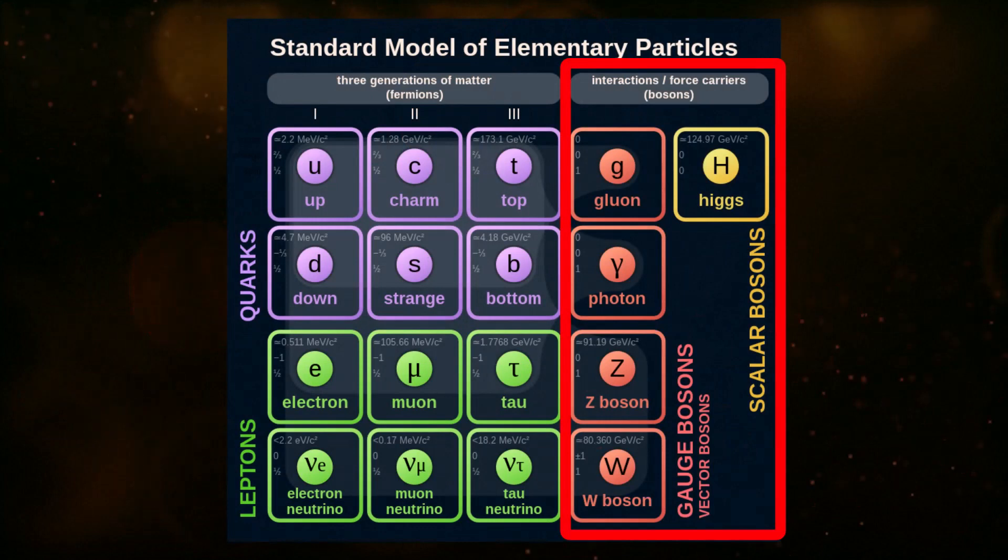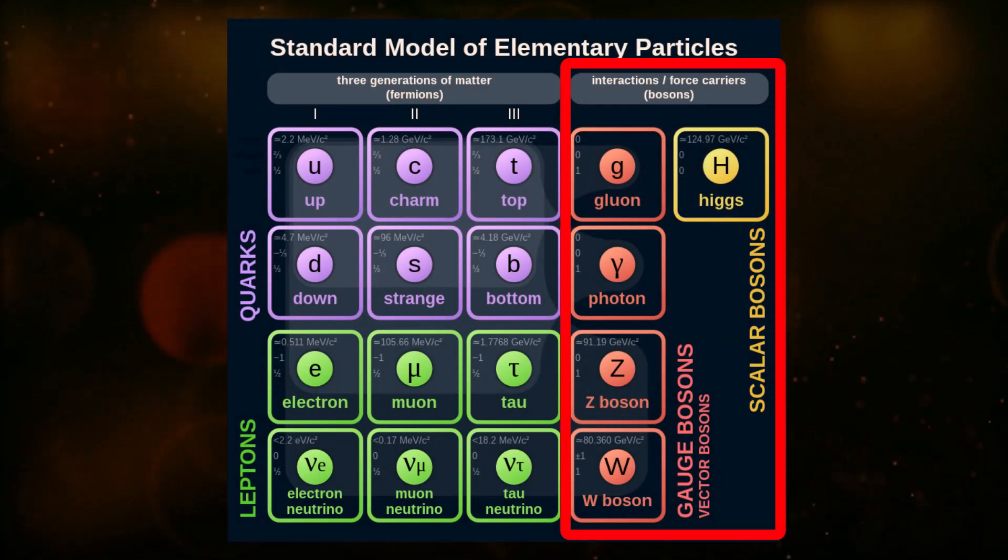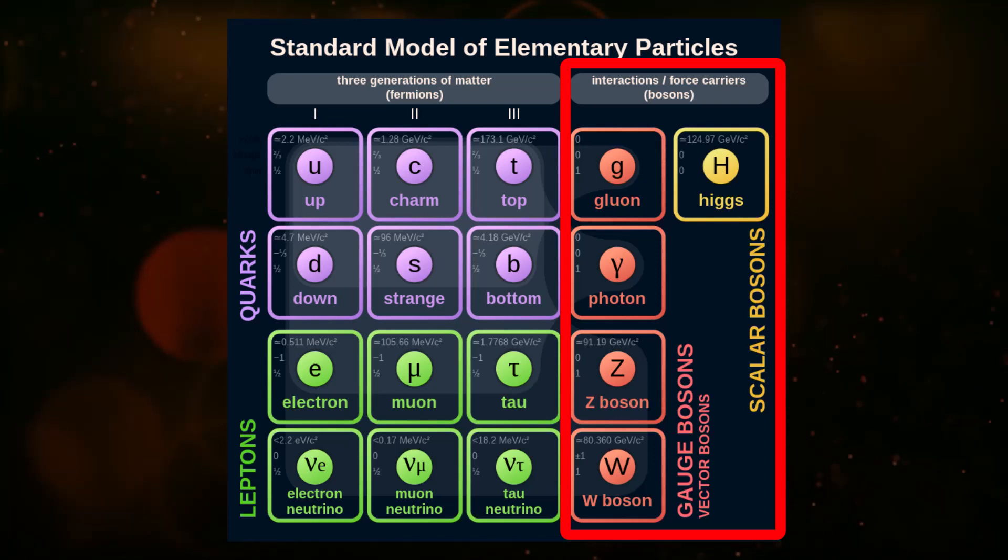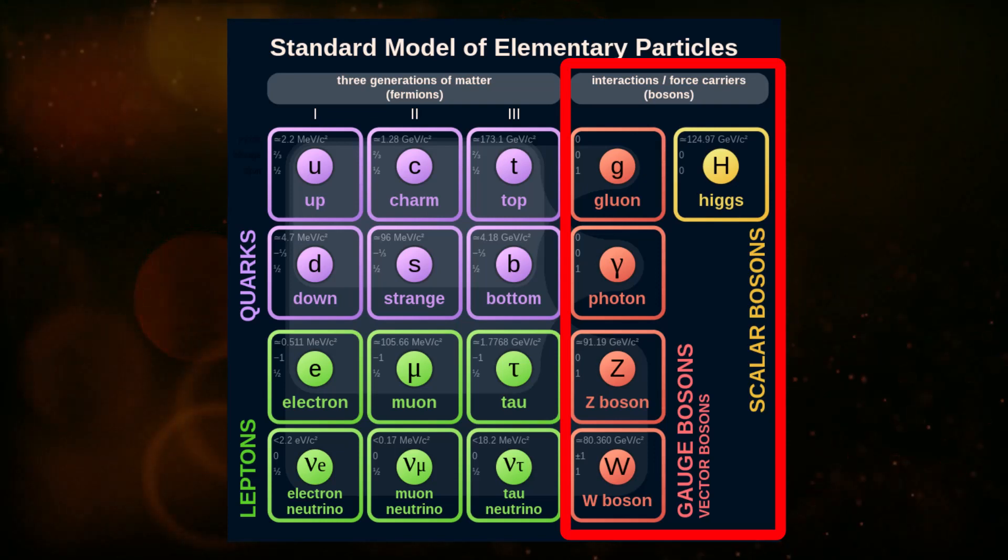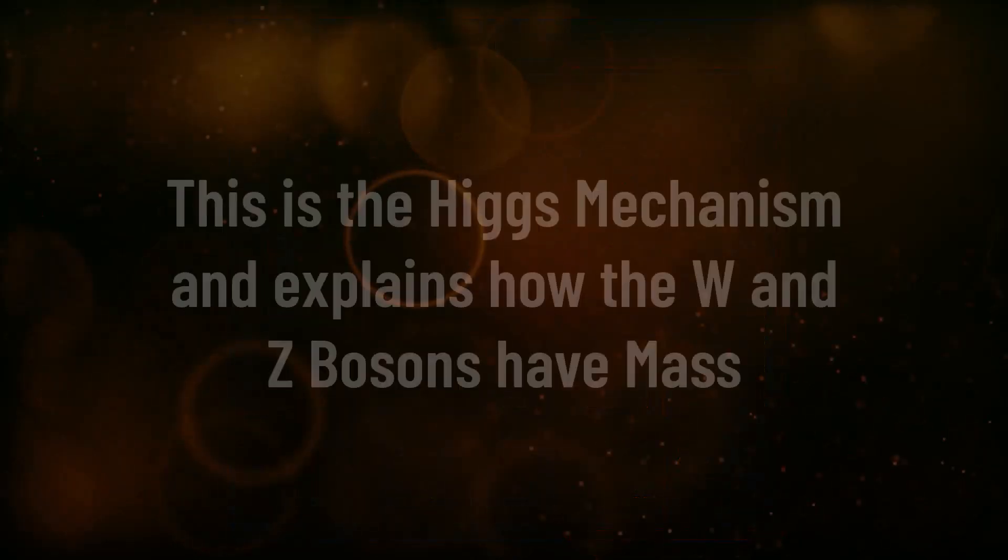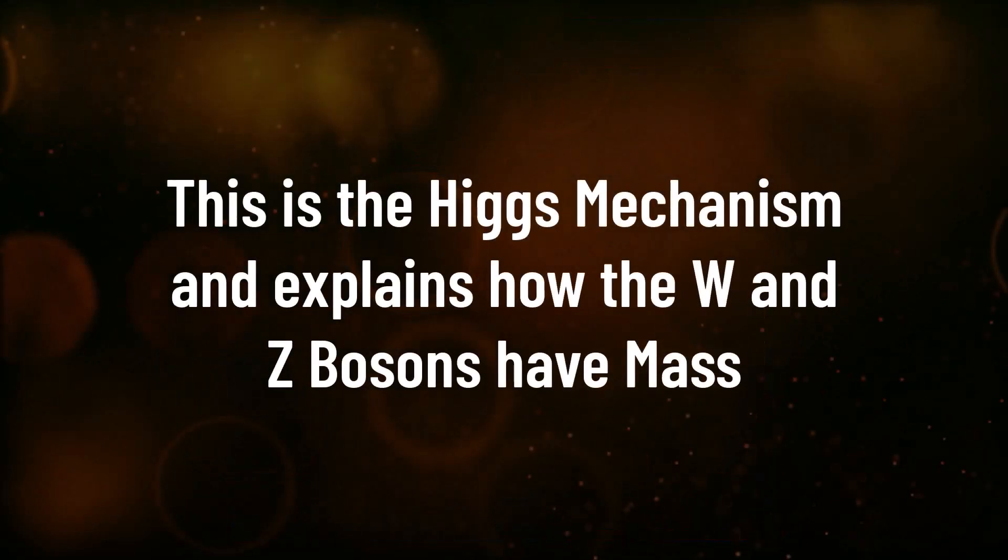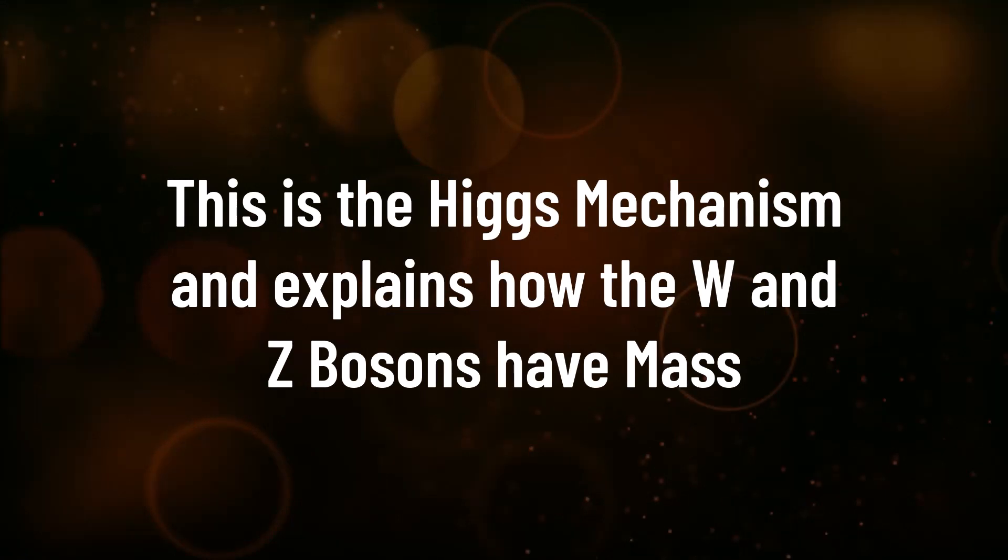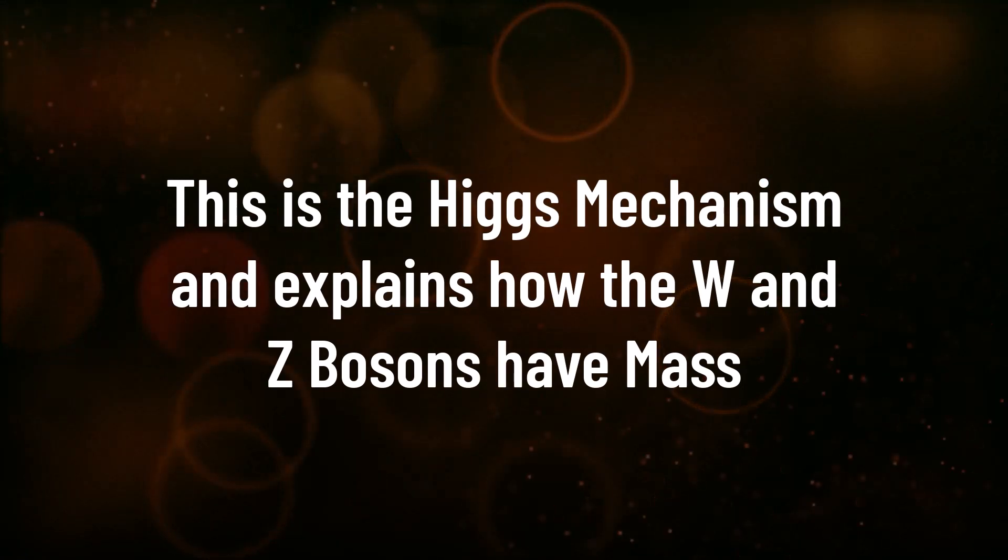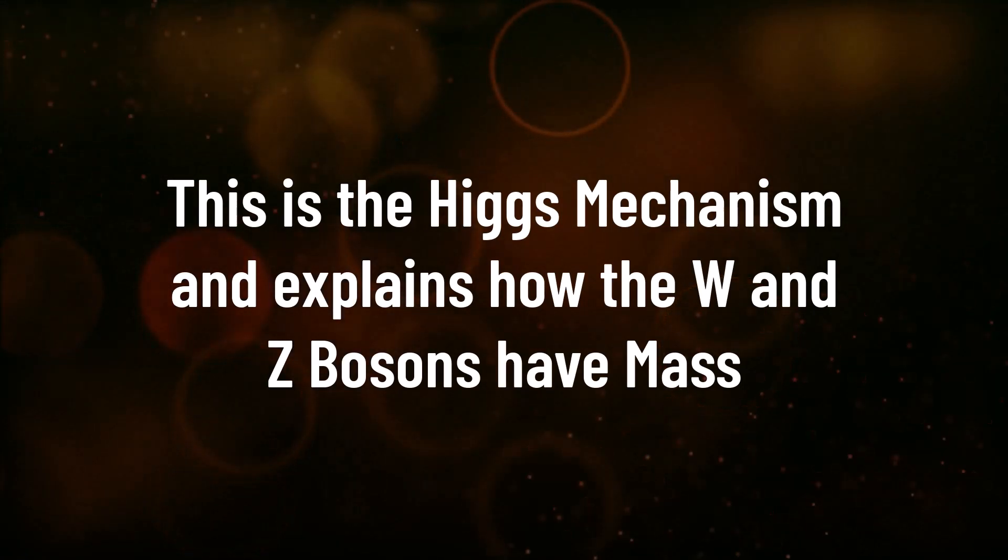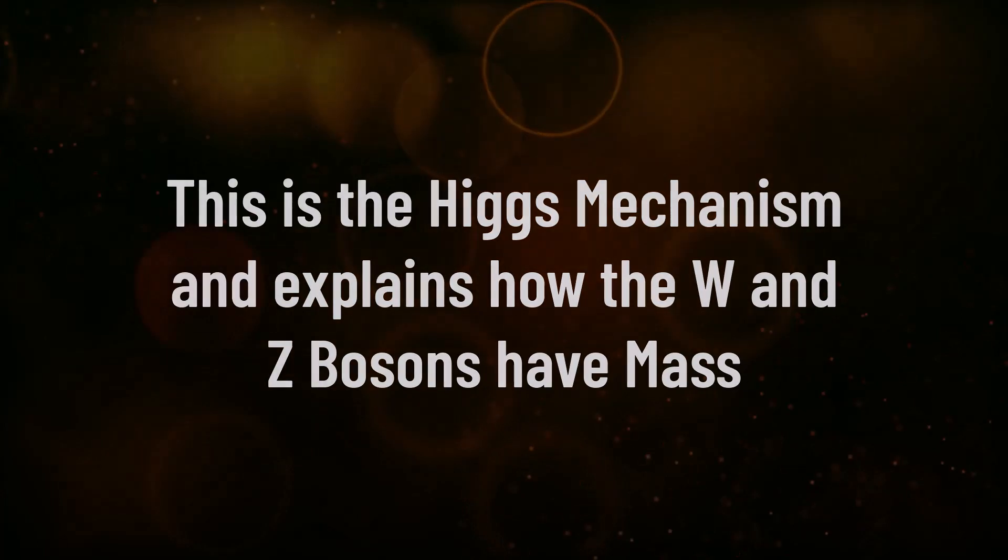This is how we can have different bosons in particle physics, which can be massless like photons and gluons, as well as massive, such as the weak force mediators, the W and Z bosons. This entire process giving mass to the gauge bosons is known as the Higgs mechanism. The idea of symmetry breaking in different ways to give different types of particles is quite a difficult idea to understand, so don't worry, the rest of the video will still hopefully make sense, but it's worth talking about.